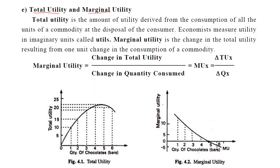Economists measure utility in an imaginary unit called utils. The next concept is marginal utility — this is the change in total utility resulting from a unit change in consumption of the commodity. Marginal utility is equal to change in total utility divided by change in quantity consumed, that is delta TUx divided by delta Qx, where Qx is the quantity and TUx is the total utility of x.